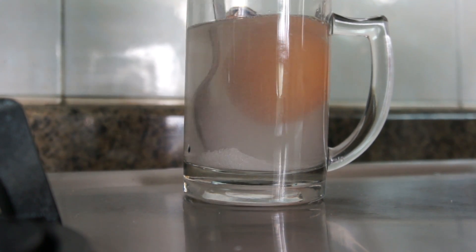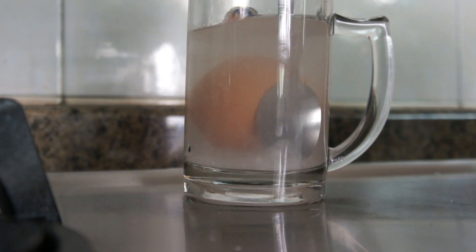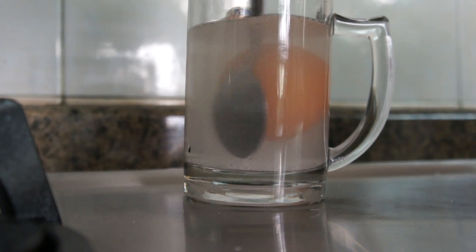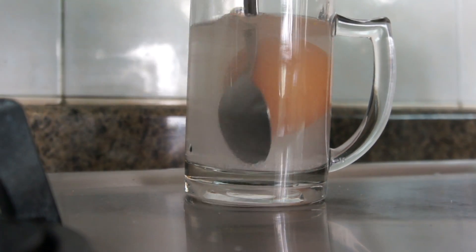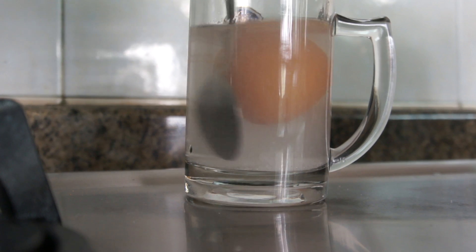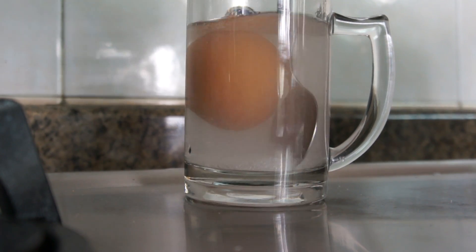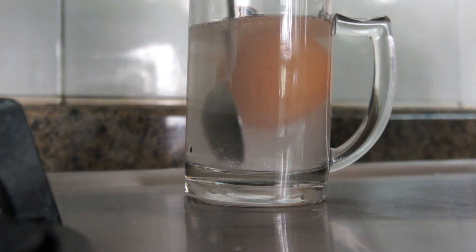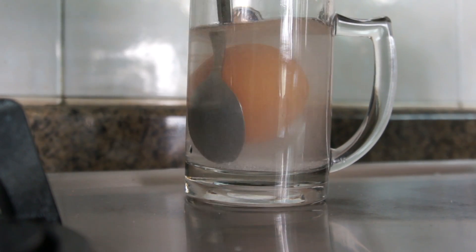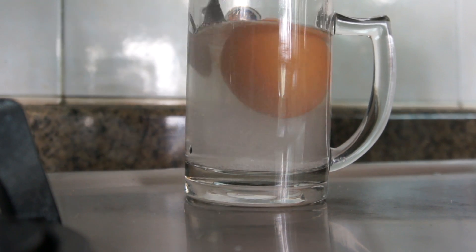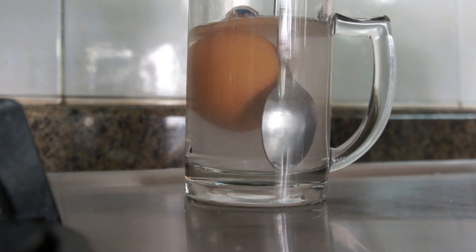There you can see the egg floating in the salt water. So that's why people float on the Dead Sea, because it contains a saturated solution of salt and that is denser than things like eggs and even human bodies.